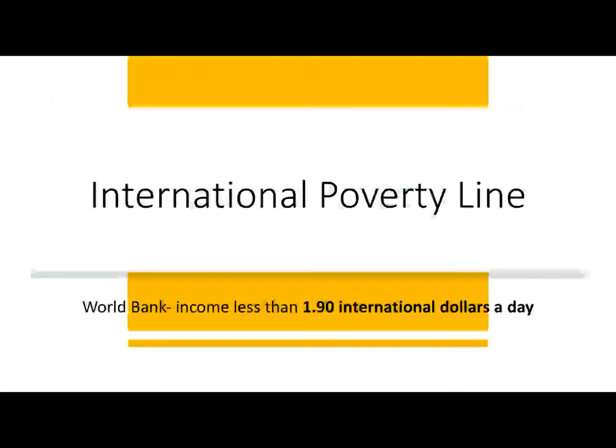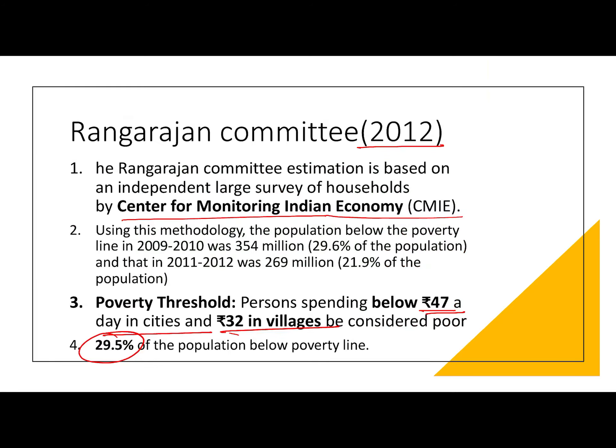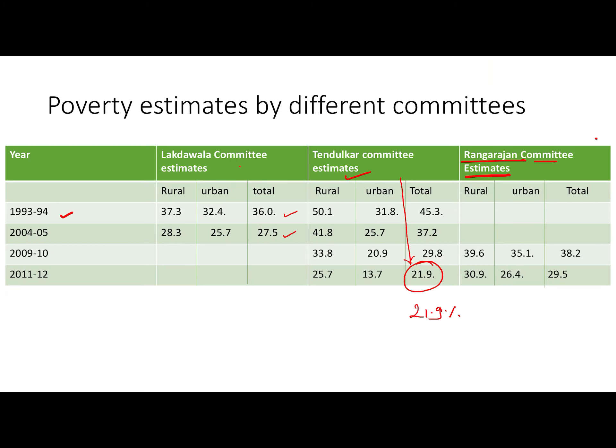The international poverty line is set at $1.90 per day. That was all about poverty and poverty lines.